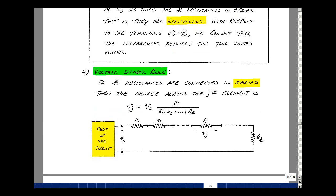There's also another property that uses series elements, and that's called the voltage divider rule. Let me just state it. If k resistances are connected in series, then the voltage across the jth element is equal to this voltage V sub s times the resistance of the jth element over the sum of all of the resistors.